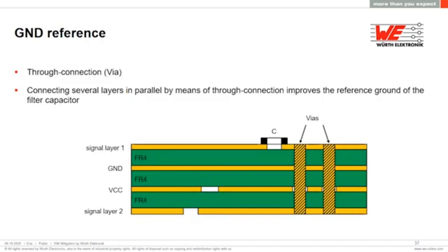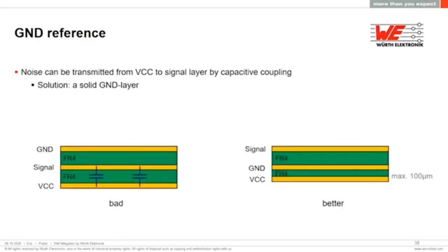It is very important to have the right ground reference. Through connections, vias, or parallel connections, we can avoid interference. The idea is to avoid antennas or extra loops that create EMC noise — having several layers connected in parallel helps remove or reduce EMC noise. This is very important from a PCB design point of view.